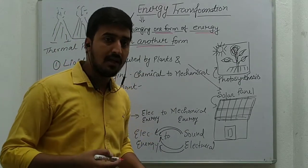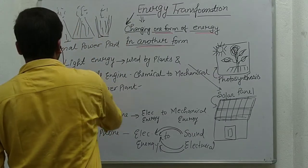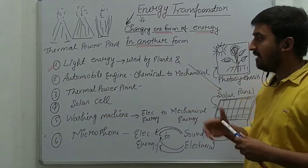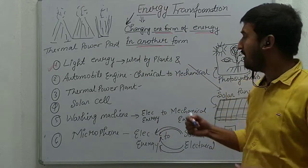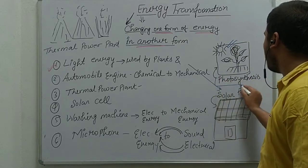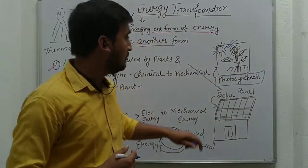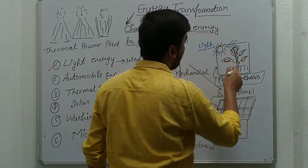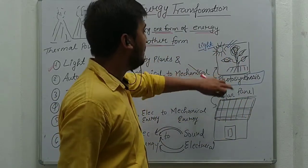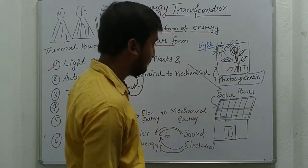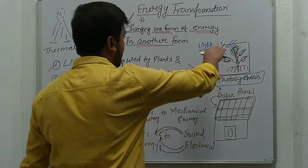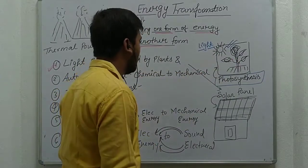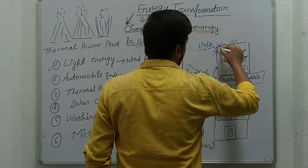The first example is light energy. How can we convert light energy into electrical energy or chemical energy? By the process of photosynthesis, we can convert light energy coming from the Sun into chemical energy. By using this chemical energy, plants can make their food. This is the first process in which light energy is converted into chemical energy.